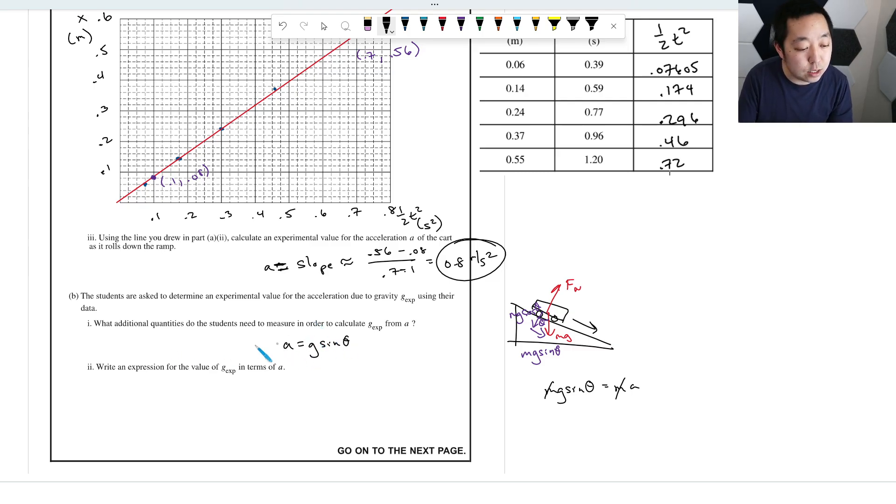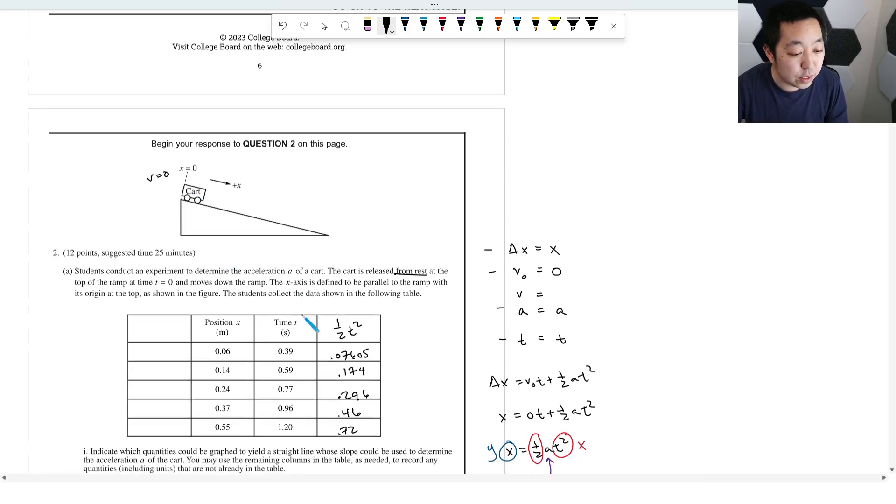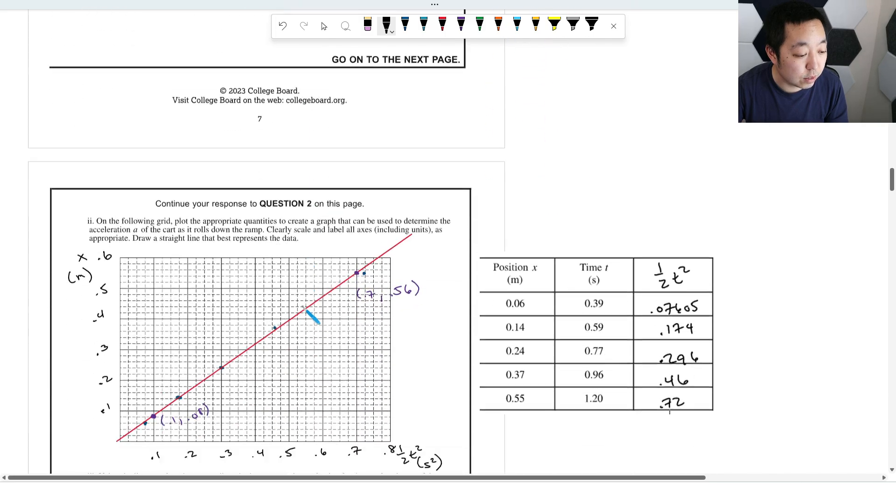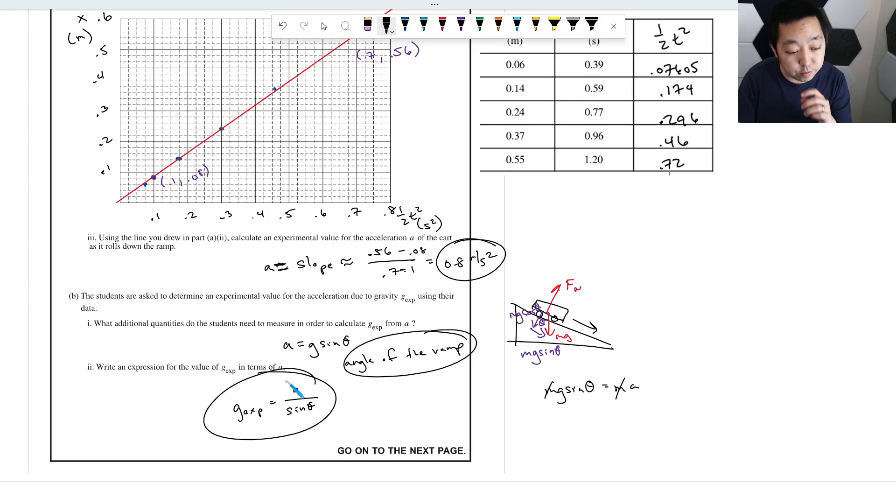So I have a I would need to know the angle of the ramp. Write an expression in terms of, they did not tell you, you could also base it based on the height of the ramp, I guess. You can think of it that way. But I would just probably do this. So I would say G experimental would be A over sine theta. And they just want in terms of A. So I think that would be fine. Had you done something like calculate the height or something like that. And then equivalently found that, there's a lot of ways you probably could sort that out. But that's probably what I would do for that one.